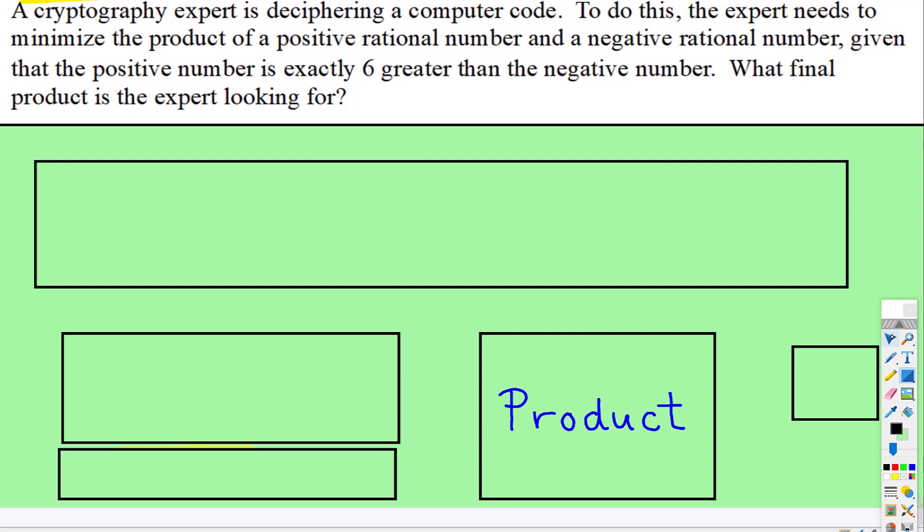Okay, another optimization problem. This time, a cryptography expert is deciphering a computer code. This sounds way more complicated, but this is going to be a really easy one. To do this, the expert needs to minimize the product. Remember, in third grade, the product means multiply.